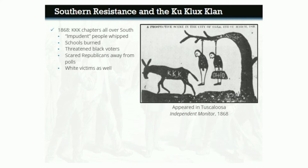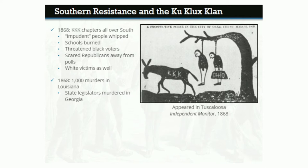Between 1868 and 1870, the main years of Radical Reconstruction, Klan violence reached horrific levels. One thousand political murders occurred in Louisiana before the 1868 presidential election. In Georgia, three scalawag members of the state legislature were murdered. The violence could prove effective: Georgia and Louisiana were the only two former Confederate states not to vote for the Republican Ulysses S. Grant that year.